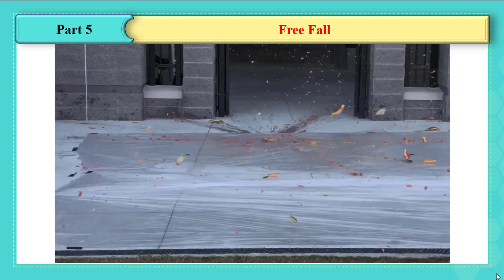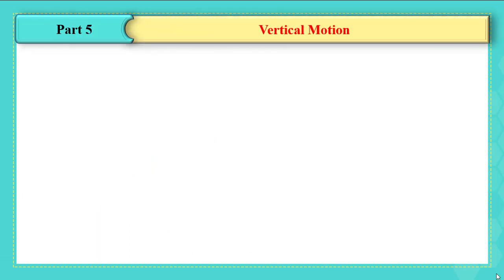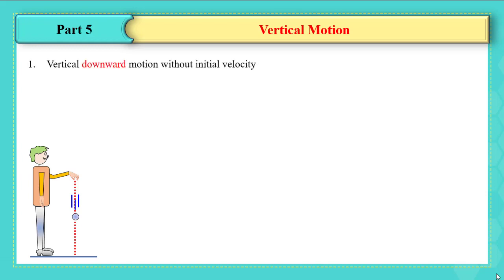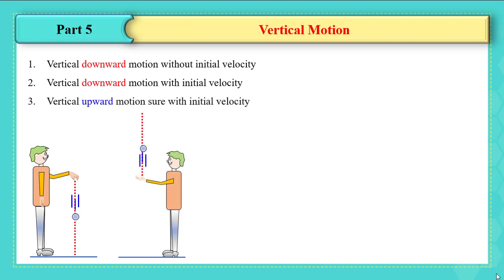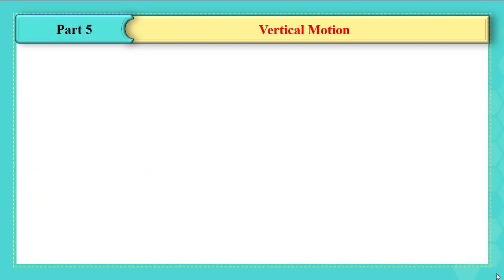We can distinguish between three cases in vertical motion: vertical downward motion without initial velocity, vertical downward motion with initial velocity, and vertical upward motion with initial velocity. What they have in common is that in all cases the only force acting on the object is the gravitational force — its weight — making it a free fall situation. We will focus on the second case: downward motion with initial velocity.